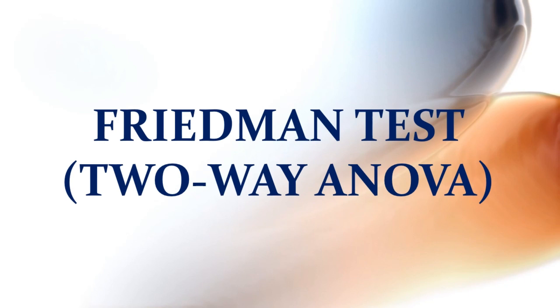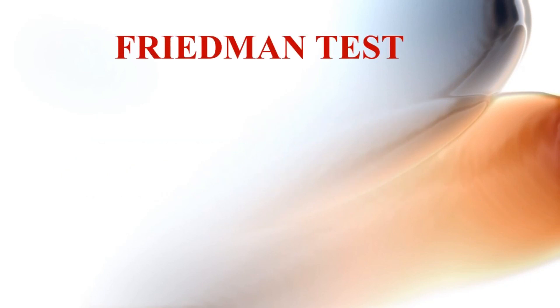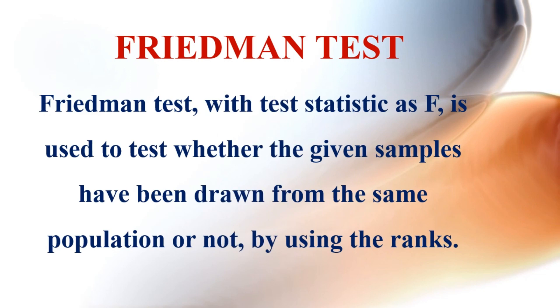The Friedman test is a two-way ANOVA alternative. The Friedman test, with test statistic F, is used to test whether the given samples have been drawn from the same population or not, by using the ranks.